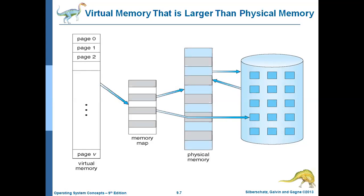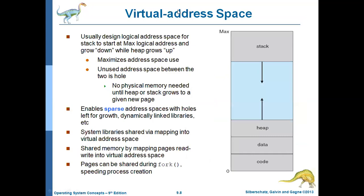The ability to load only the portions of processes actually needed has several benefits. Programs can be written for a much larger address space than physically exists on the computer. Since each process uses only a fraction of the total address space, more memory is left for other programs to execute, improving CPU utilization and system throughput. Less I/O is needed for swapping processes in and out of RAM, which speeds up processing.